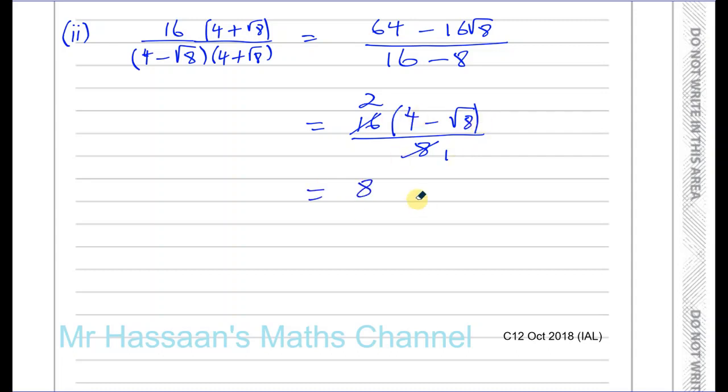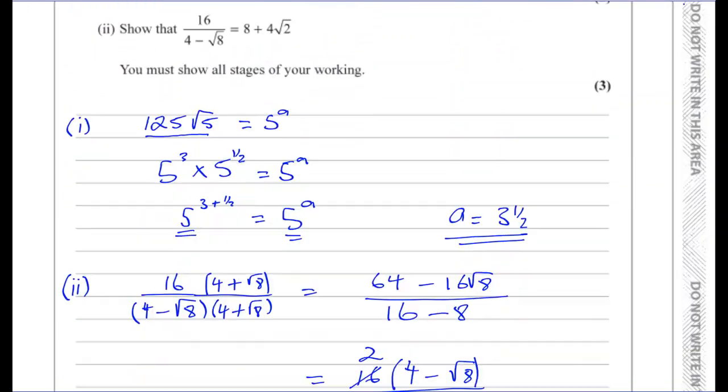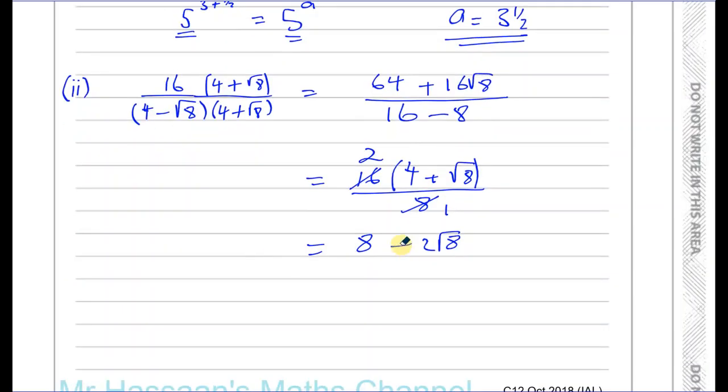Now, the question didn't have it in this form. It has the form eight plus four root two. So that should be a plus here, not minus. Silly mistake. Please take care of making silly mistakes like that. So you're going to have eight plus.